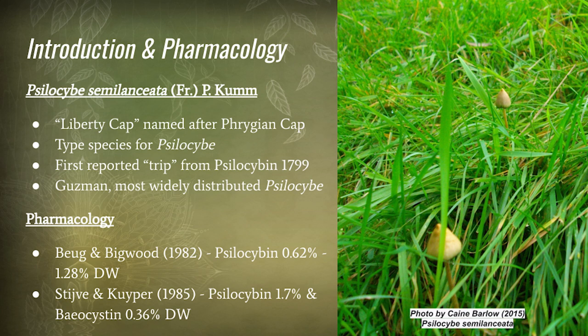Pharmacologically speaking, Boog and Bigwood in 1982 reported psilocybin between 0.62% to 1.28% dry weight. Stephen Kuiper in 1985 reported psilocybin at 1.7% and baeocystin at 0.36% dry weight.